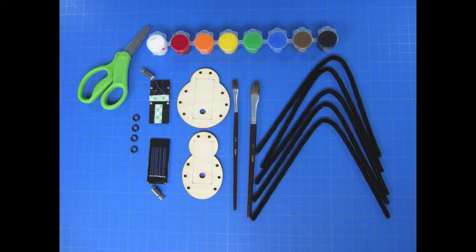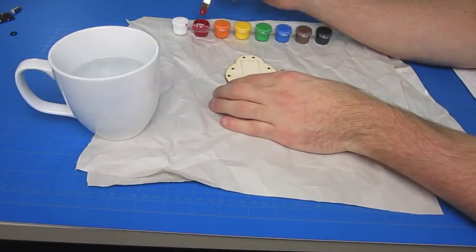To make this project you'll need the following: scissors, paint, paint brushes, pipe cleaners, some bodies either wood or cardboard, solar cells, vibrating motors, foam tape, and some rubber washers.